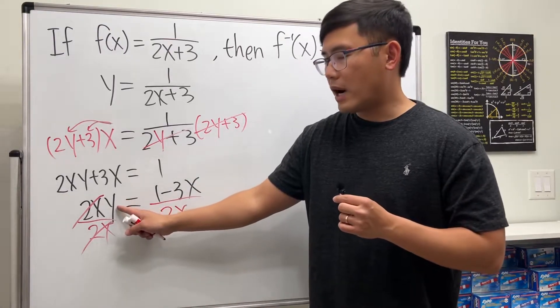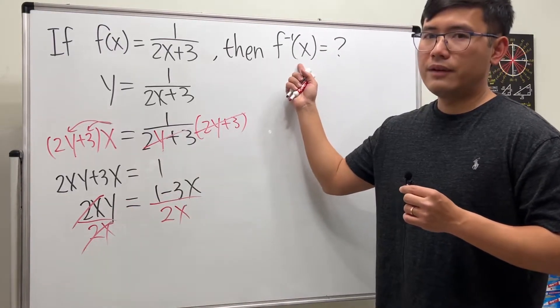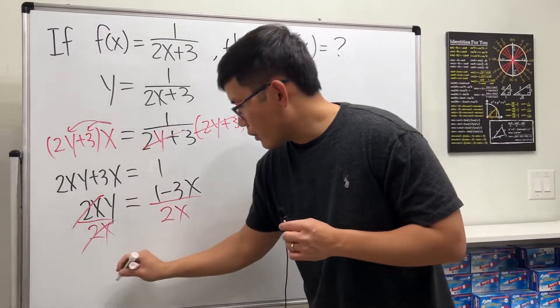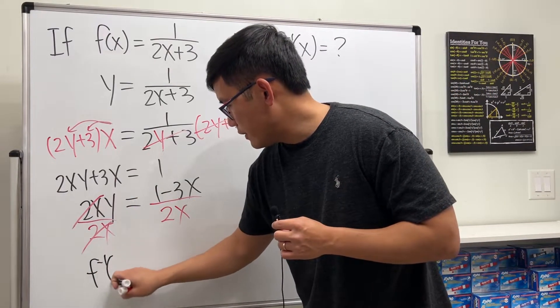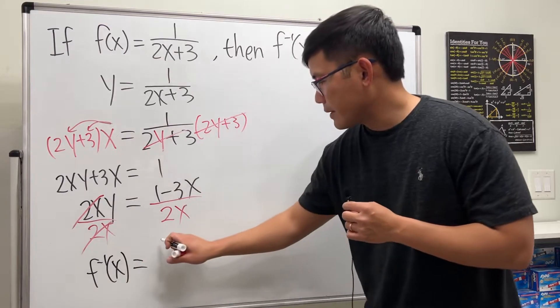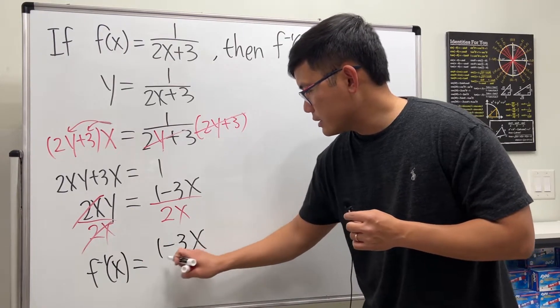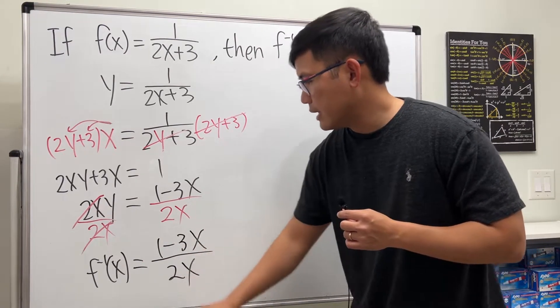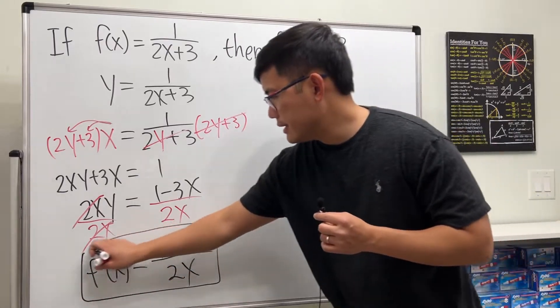And step 4 is we write this y as our f inverse notation, so here is our f inverse, and that's equal to 1 minus 3x over 2x. So this right here is it.